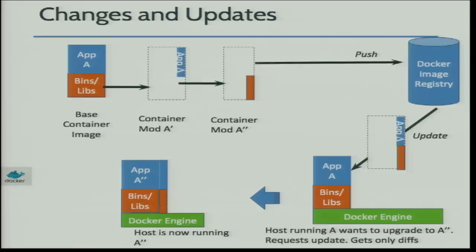What happens when you want to update your application container? Every time you make a change, because we use a union file system, we keep only the difference between your base image and the upper layer. When you push, we also only push this differential. When someone pulls, it's the same — you only pull the upper layers, which are much more lightweight than your base image. So it's really efficient in terms of deploying your code.